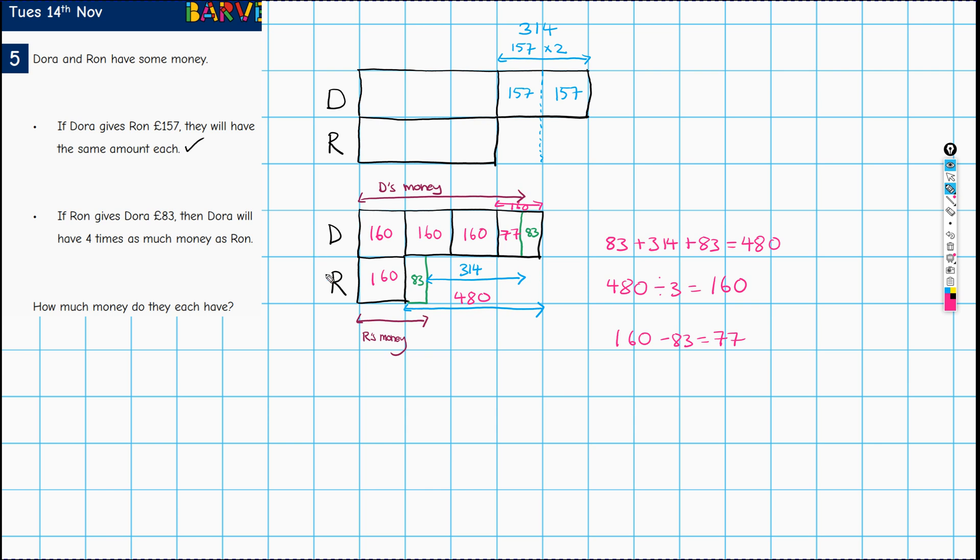So it looks like we've got numbers everywhere now. Our question is how much money do they each have? Well, what does Dora have? Dora has 160 times 3. Well, we know that already because we divided 480 by 3 to get 160. So it's 480 plus 77, and that gives us 557. And what about Ron's money? Ron's money is 160 plus 83, and that gives us 243. And those are your answers. I hope that helps.